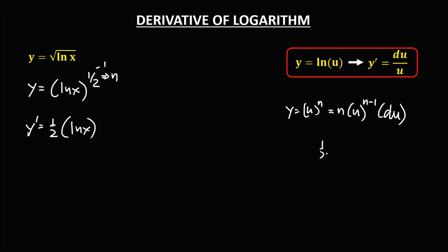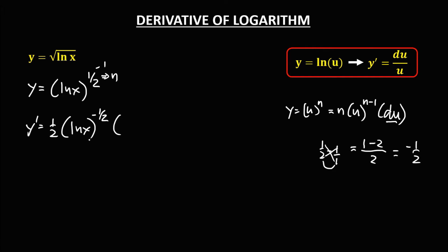Computing the exponent: 1 half minus 1 using cross multiplication gives 1 minus 2 over 2, which equals negative 1 half. So the exponent is negative 1 half. Then we multiply by the derivative of u, which is the derivative of ln x, that's 1 over x.